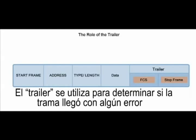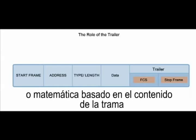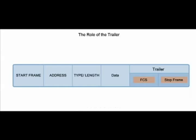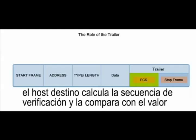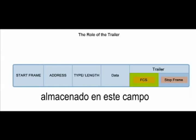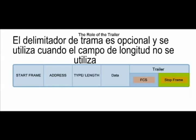The trailer is used to determine if the frame arrived with any errors. Error detection is accomplished by having the source host calculate a logical or mathematical sequence based on the content of the frame and placing that sequence in the frame check sequence field. The destination host will calculate its own check sequence and compare it to the values stored in this field. If these values do not match, then there was an error and the frame is discarded. The stop frame is optional and is used when the length field is not used.